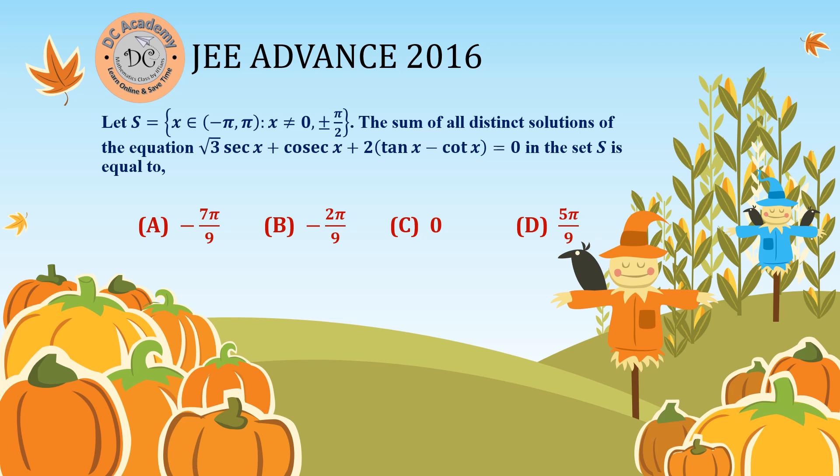In this video, we are going to solve a problem which appeared in JEE Advanced 2016. Let's understand the problem statement. In this particular problem, we need to find out the number of solutions of the given trigonometric equation that lie inside the interval minus pi to pi. It is provided that x is not equal to 0 and x cannot be equal to plus or minus pi by 2.